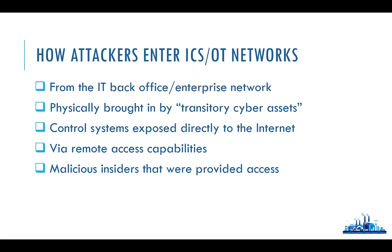There are a couple of main ways that attackers can get into control system environments. One of the more common ways — like we saw in the Colonial Pipeline breach — is attackers from a ransomware group got an employee in the back office to click on a link or open a malicious attachment, infect their system, and that infection started spreading into the control system network. That's a very common way: start on the IT network and then use those connections to move into the OT network.